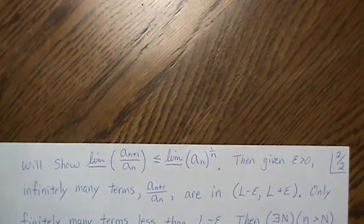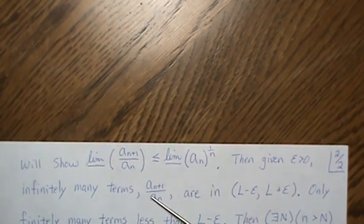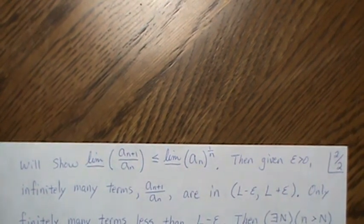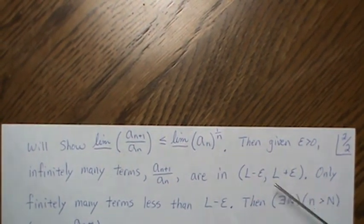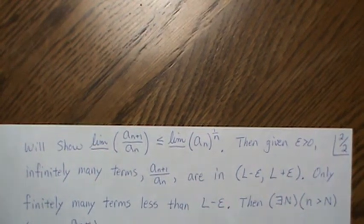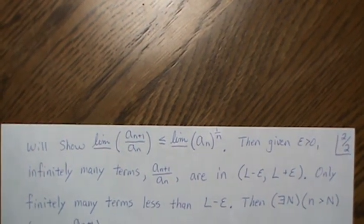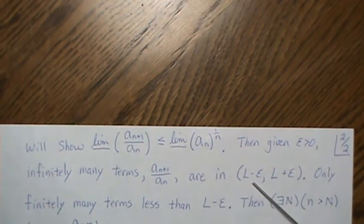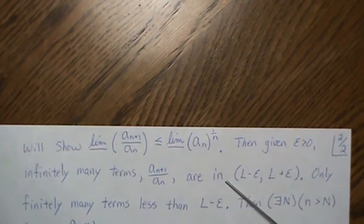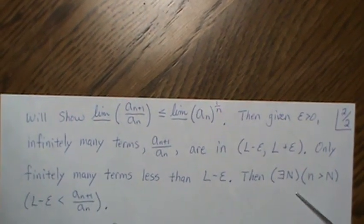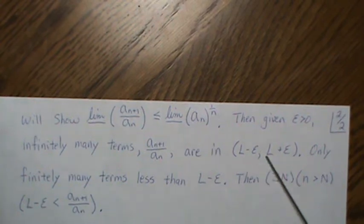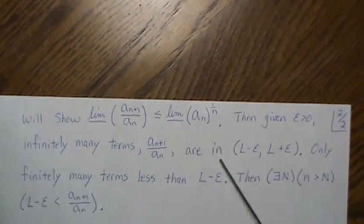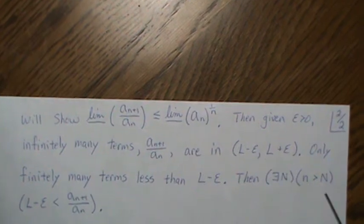L is this limit infimum. So the values of the ratio fall in that interval infinitely many times. Only finitely many terms are less than L minus epsilon, because that's what the definition of an accumulation point tells us, and we're taking the limit infimum of all those accumulation points. Since only finitely many terms can be less than that bound, at some point all terms must be greater than L minus epsilon. That's what the big N represents.